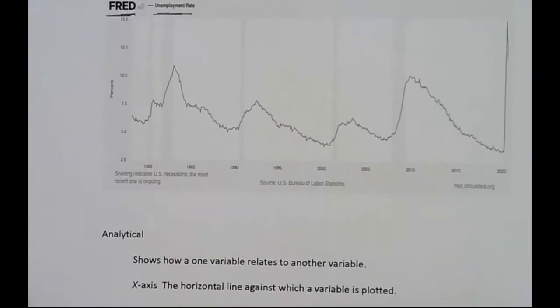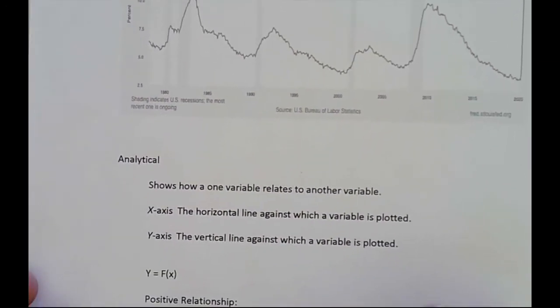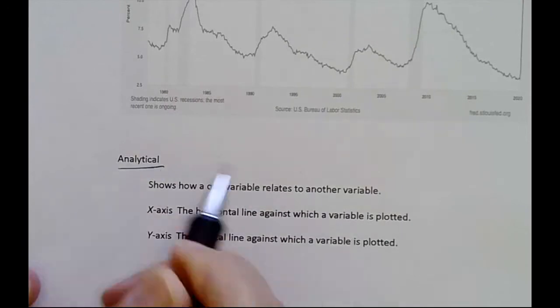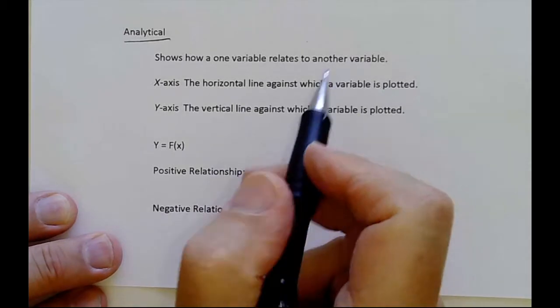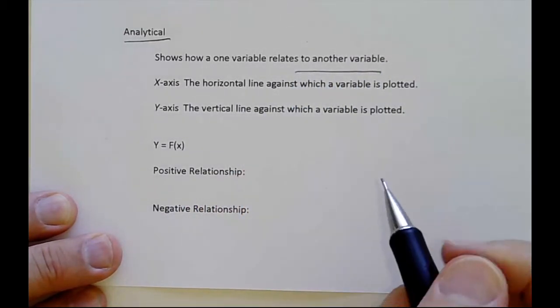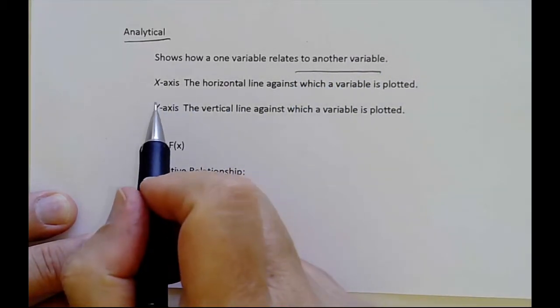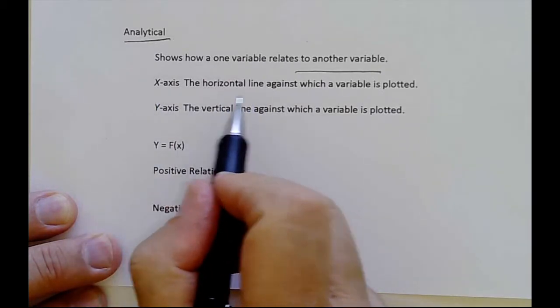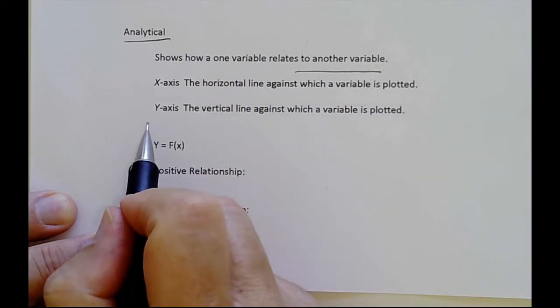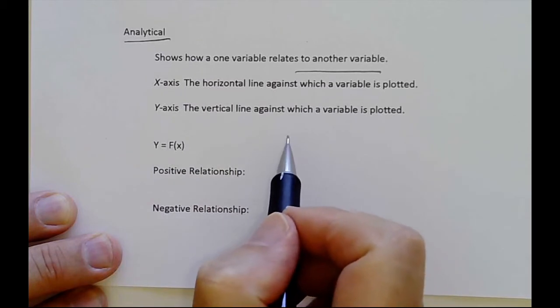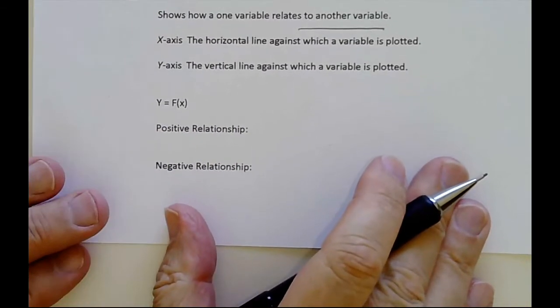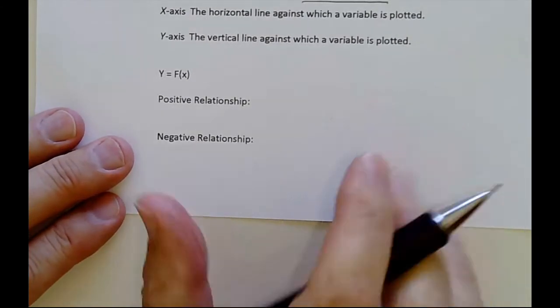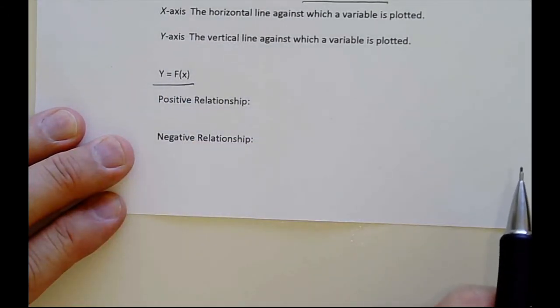Now the kind of graphs which we're going to use for most of our analysis are analytical graphs. These show how one variable relates to another variable. We have two variables, your x and y variable. The x variable is on the x-axis, the horizontal axis. The y variable is on the y-axis, the vertical line. Typically you see mathematical relationships written as y equals f of x, meaning y is a function of x, or y depends on x.